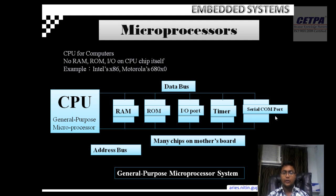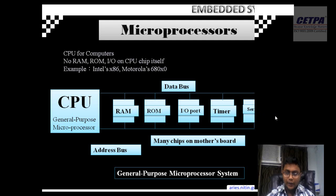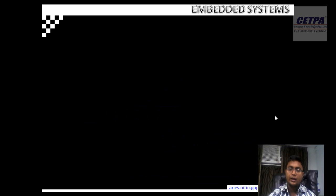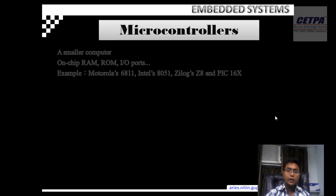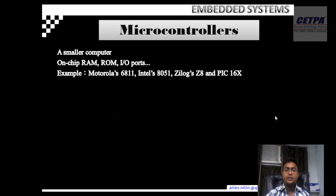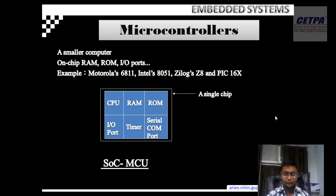You also use other peripherals like a network card, audio card and video card. So if you want to make an embedded device using a microprocessor, you have to connect a lot of peripherals. Microcontrollers are more advanced than microprocessors — they are integrated chips which contain RAM, ROM, and input/output ports all on a single chip. In short, microcontrollers are system-on-chip, or SOC.